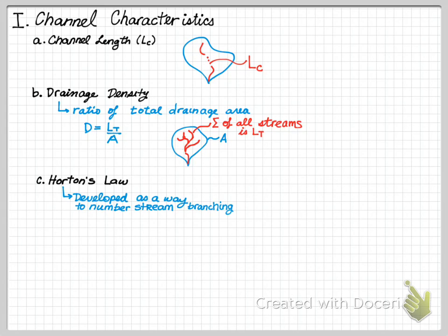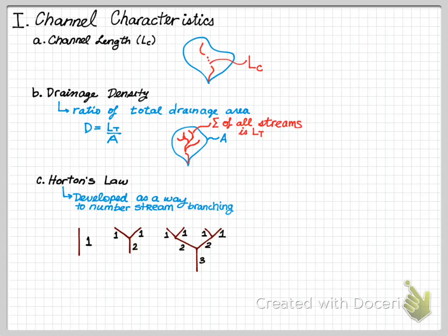We can also quantify and number stream ordering through Horton's Law, which was designed to understand how a river system branches. The higher the order, the larger the system. A single stream with no tributary channels has a first order. If two first-order channels combine, the resulting channel is a second order. When two second-order channels meet, you get a third order. However, if a second-order and a first-order stream intersect, the result remains a second order. Even if three second-order channels converge at the same point, the result is still a third order — it does not jump to a fourth order.